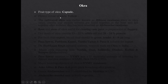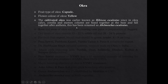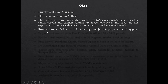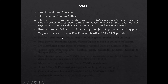Fruit type of Okra is capsule and flower color is yellow. The cultivated Okra was earlier known as Hibiscus esculentus. Since in Okra the calyx, corolla, and stamen column are fused together at the base and fall together after anthesis, it is renamed as Abelmoschus esculentus. Okra roots and stem are useful for clearing the cane juice in preparation of jaggery. Okra seeds contain 13 to 22% edible oil and 20 to 24% protein.